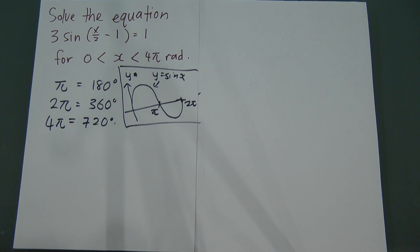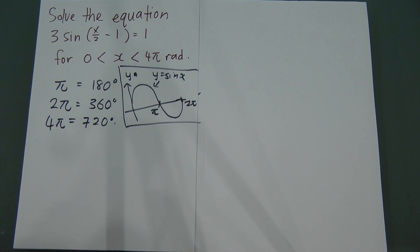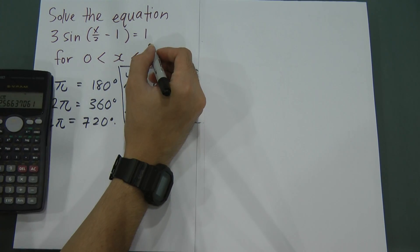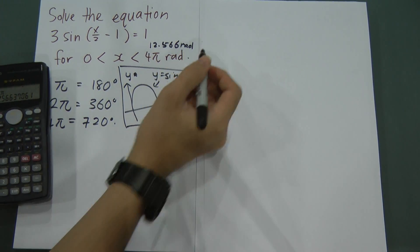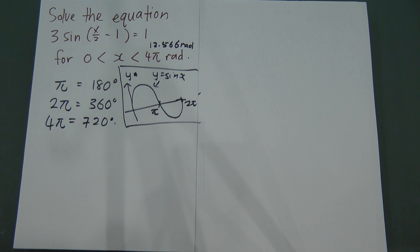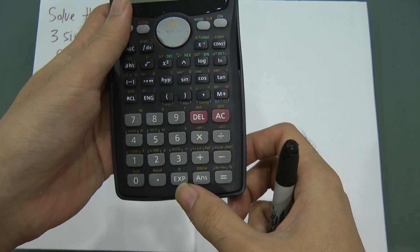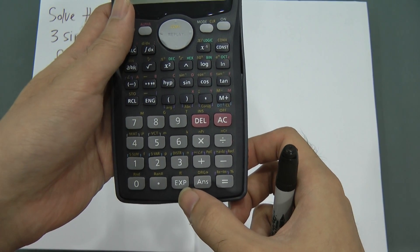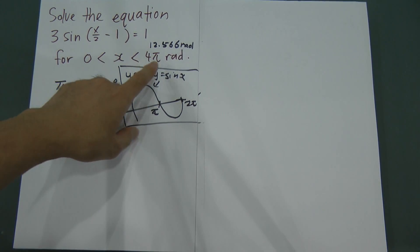Alternatively, you can change 4 pi to radian form. Just press 4 multiplied by pi on your calculator and you'll get 12.566 radians. If you don't know where the pi button is, you press Shift and then press the x-power button to get pi.